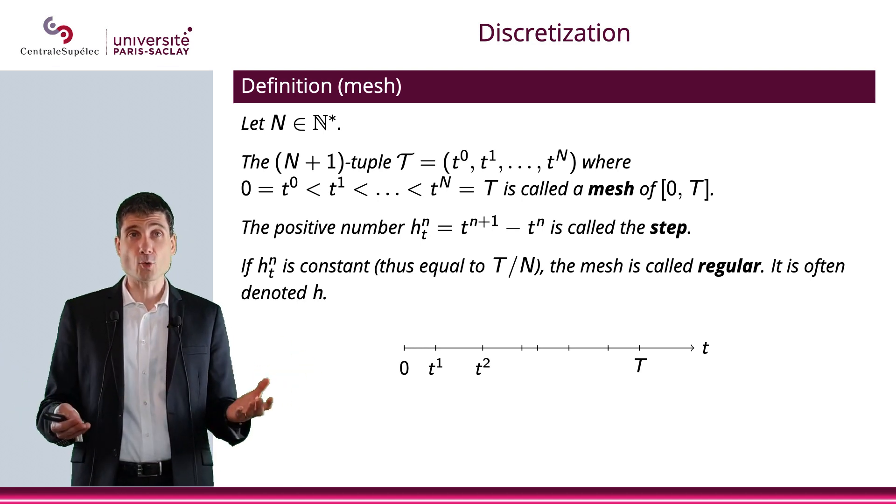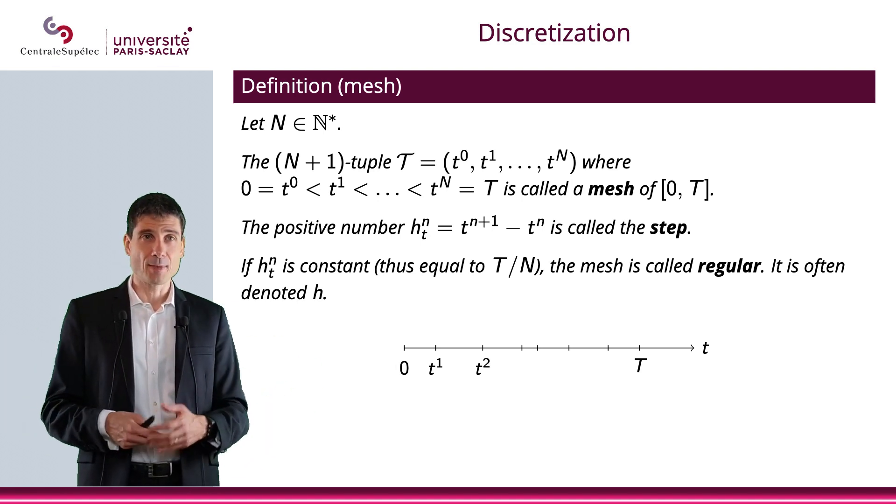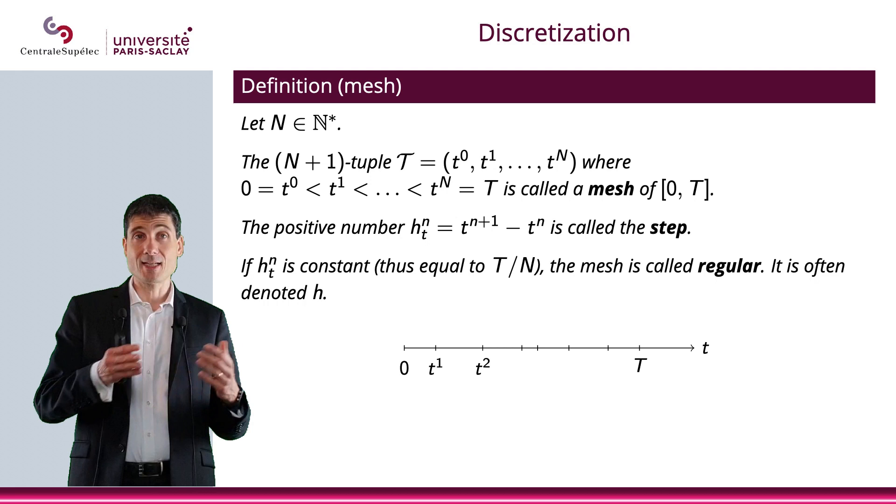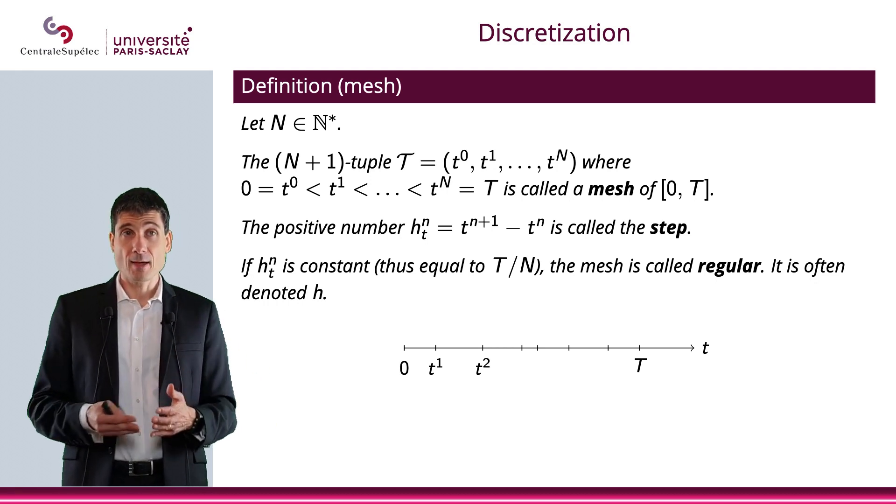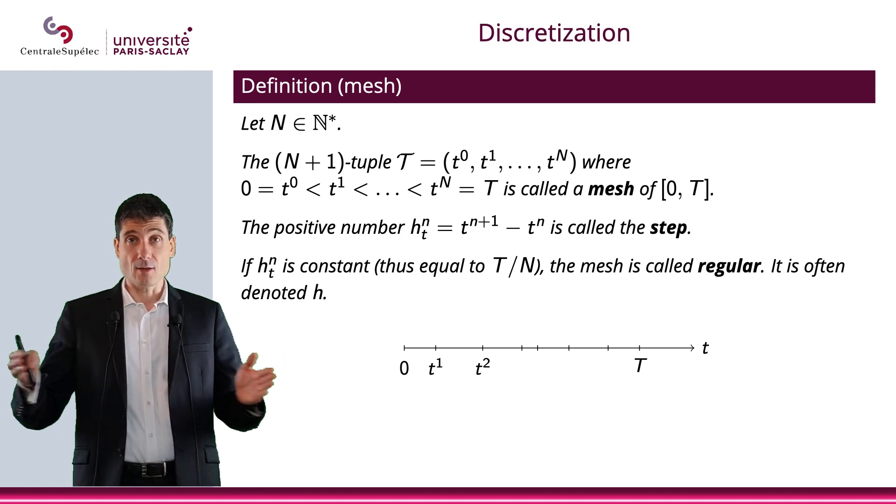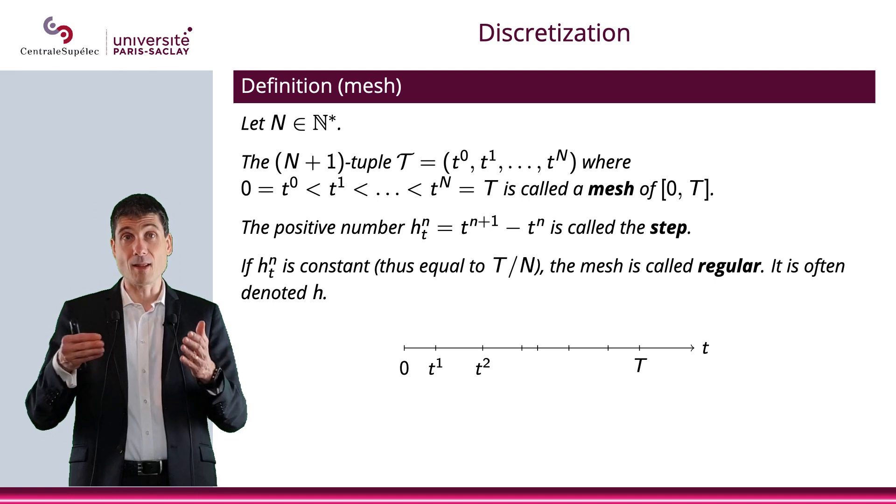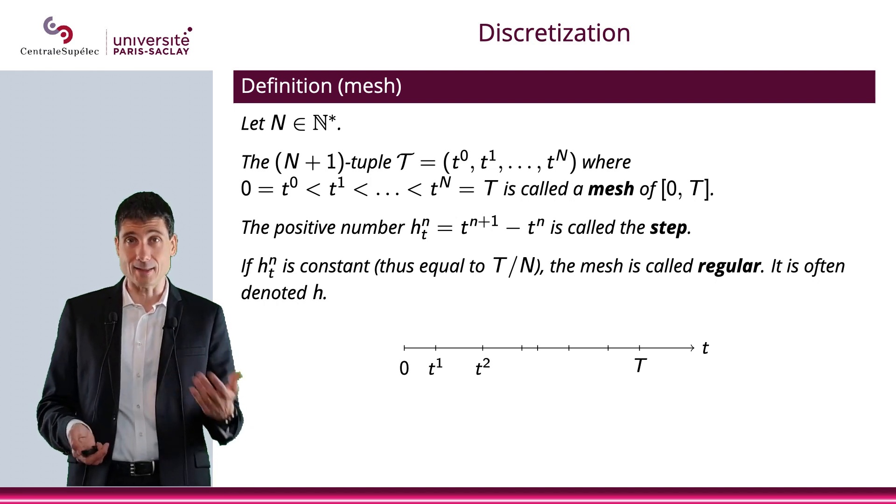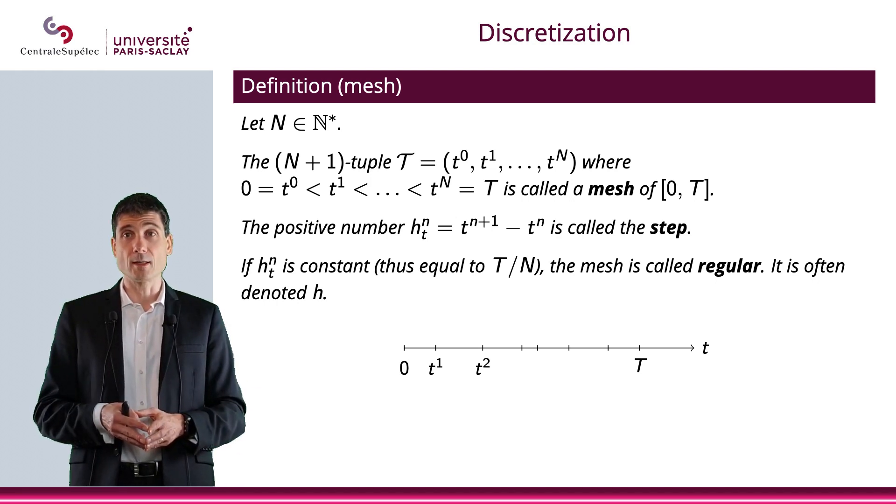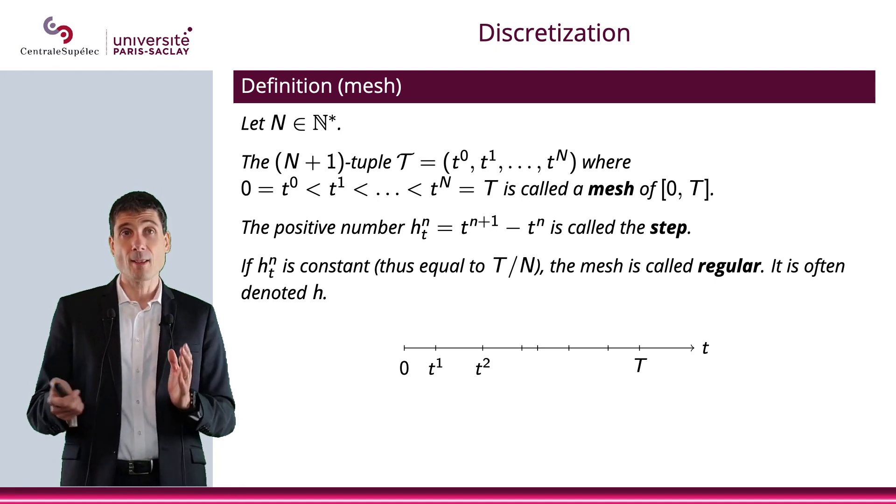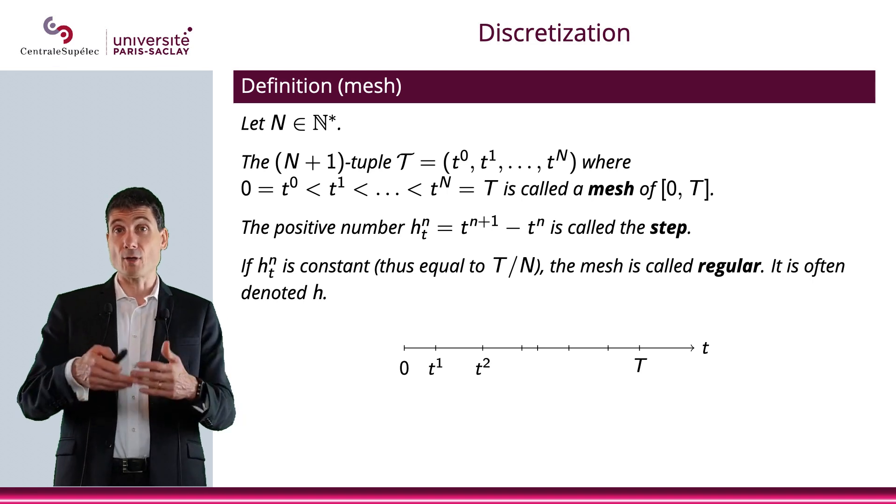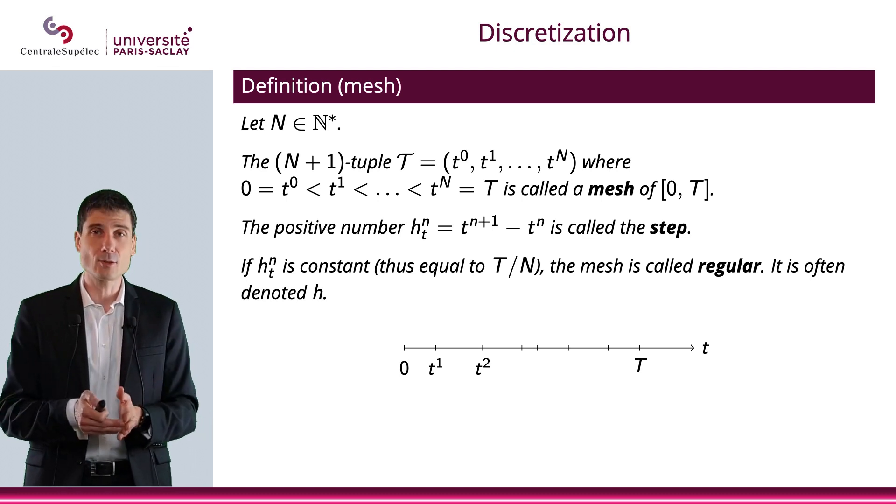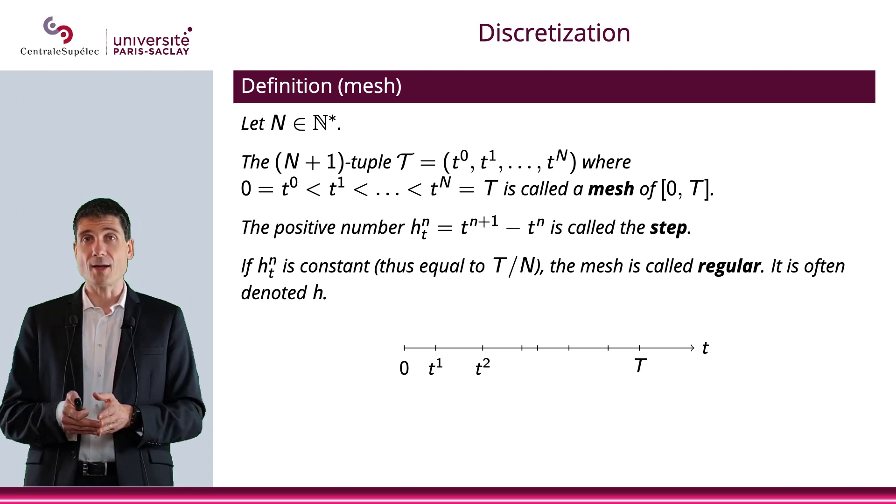We have n+1 values T^i from T^0 to T^n. The positive number h^i_T = T^{i+1} - T^i is called the step. If h^i_T is constant, meaning each interval [T^i, T^{i+1}] has the same length, then the mesh is called regular, and the step is denoted h_T, h, or Δt. This is what we will consider in this class most of the time, even though it is possible to use variable steps to refine the mesh where interesting things happen.